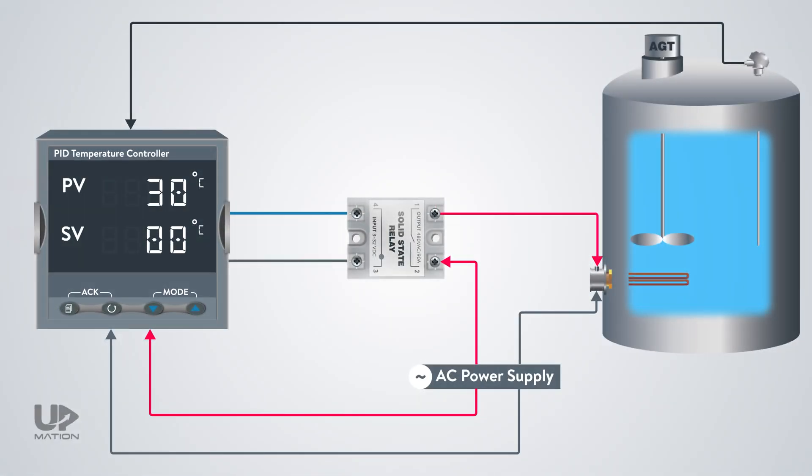As the controller shows, the current temperature of the water inside the tank is about 30 degrees centigrade. As soon as I adjust the temperature set point in the controller to, for example, 80 degrees centigrade, the controller will compare the set value and process value and decides to turn on its output, which is a fixed DC voltage to increase the temperature up to 80 degrees.